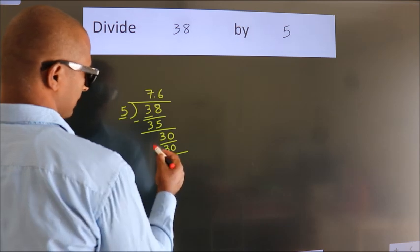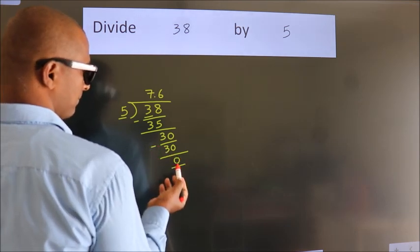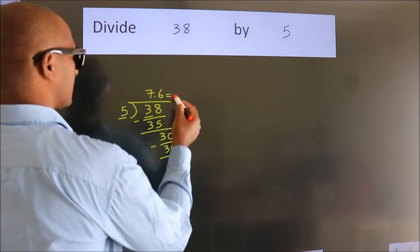Now we subtract. We get 0. We got remainder 0. So this is our quotient.